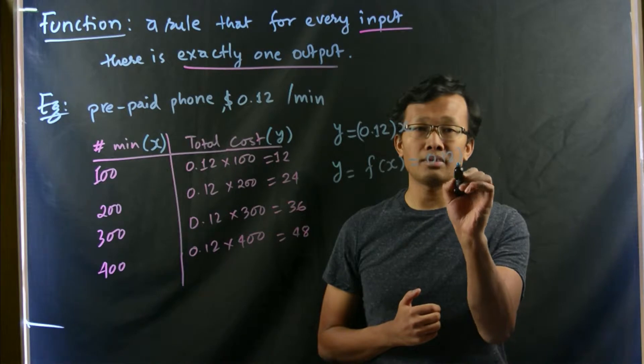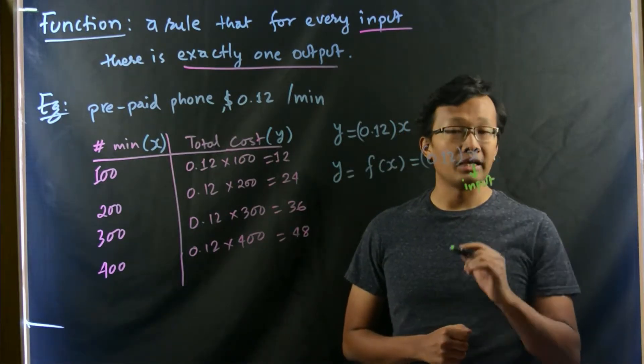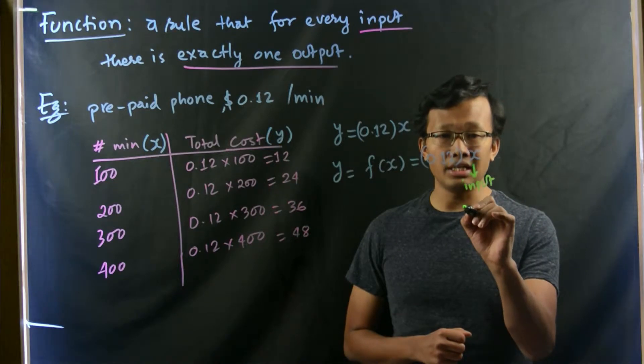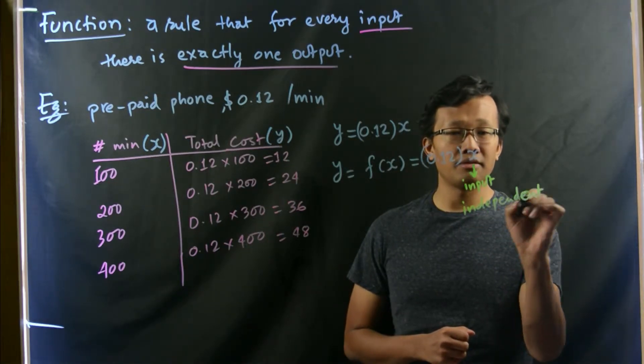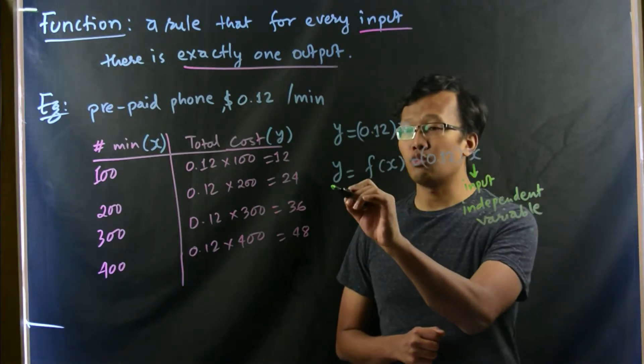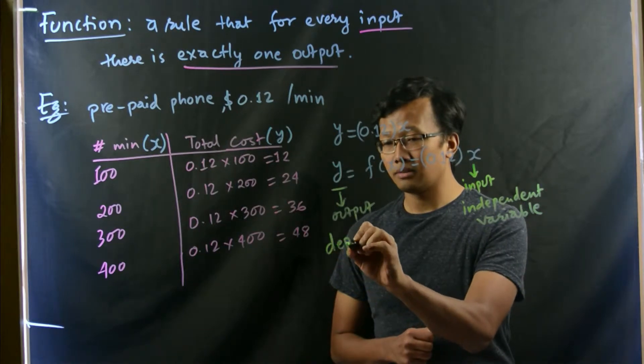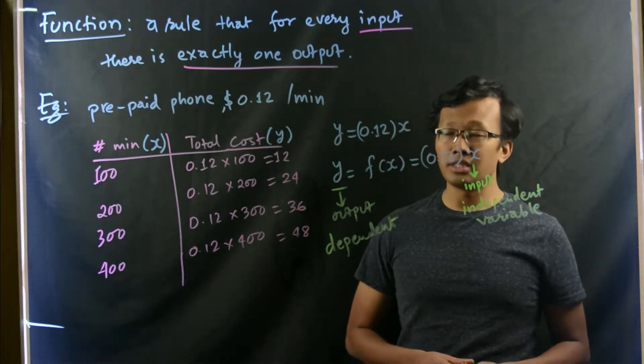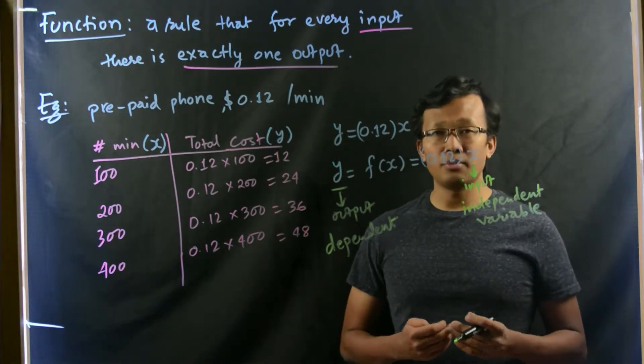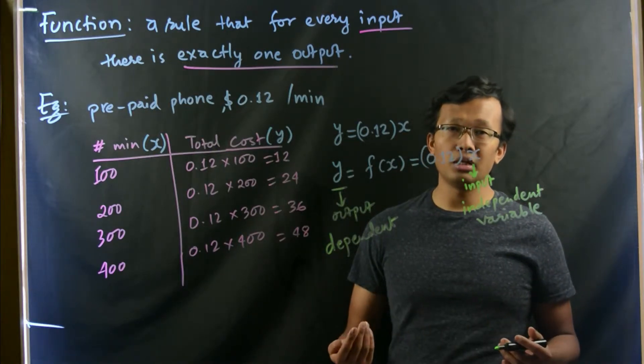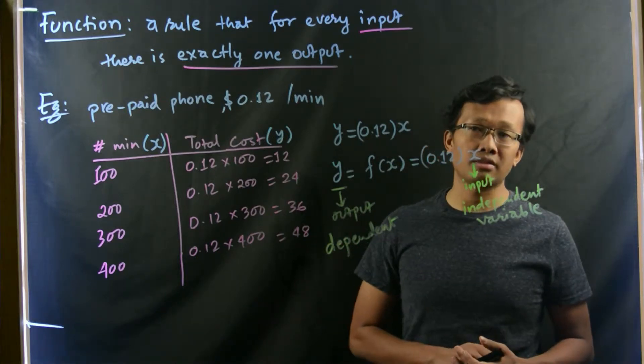Equals to 0.12 times x. So, this x is the input, and it is also known as the independent variable, whereas this y is the output, and it is the dependent variable. So, this is how we understand function. I hope you understood how we can model a simple, real-life experience into mathematical sense.